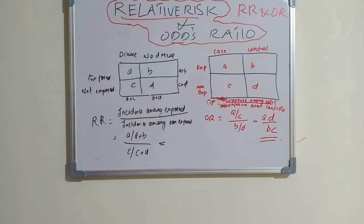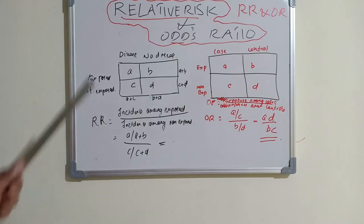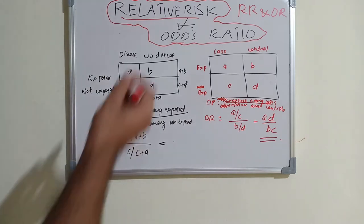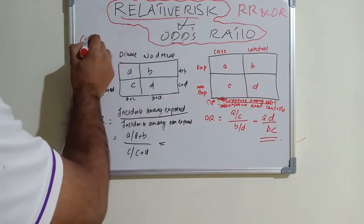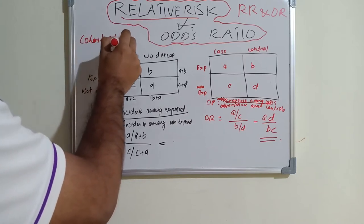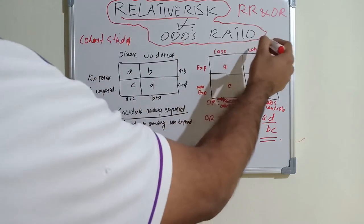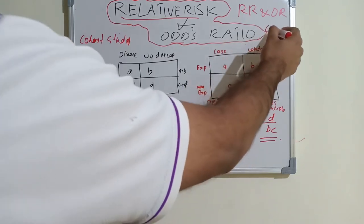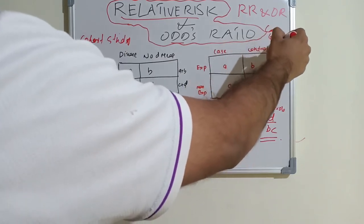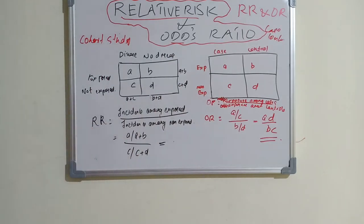Relative risk is seen in cohort study, which is a prospective, forward-looking, or longitudinal study. Odds ratio is calculated in case-control study. Relative risk is always the best method of risk assessment and is used in cohort studies, while odds ratio is used in case-control studies.